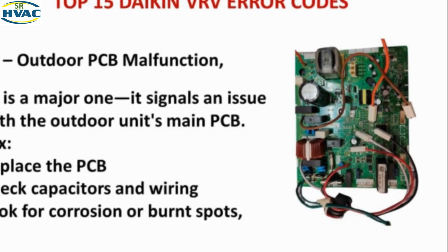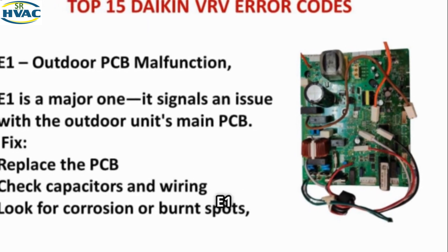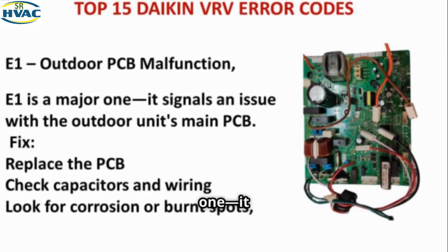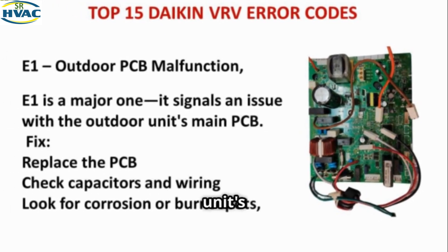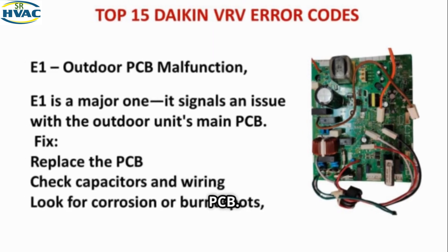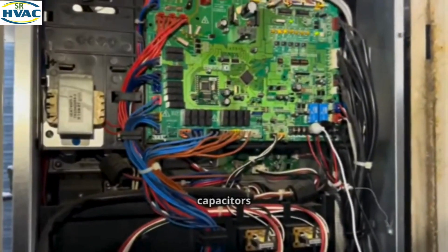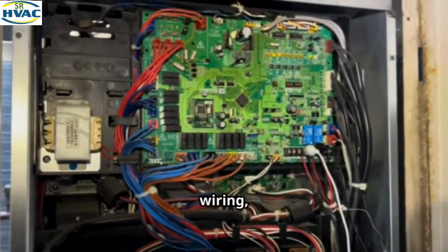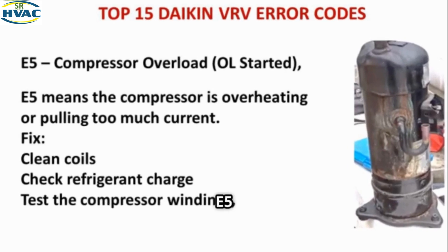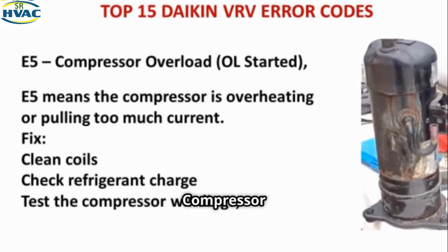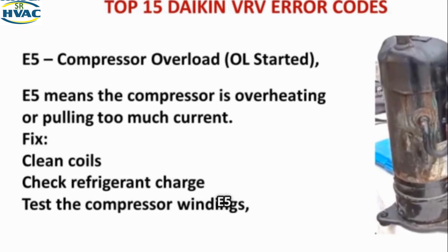Chapter 8 — E1: Outdoor PCB Malfunction. E1 is a major one — it signals an issue with the outdoor unit's main PCB. Fix: Replace the PCB, check capacitors and wiring, and look for corrosion or burnt spots.